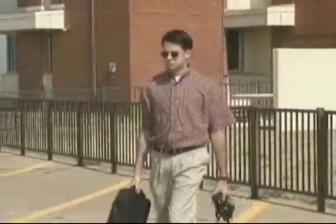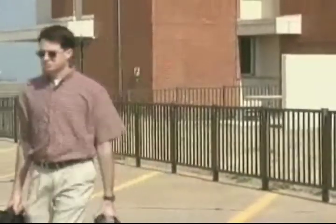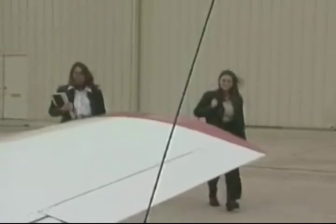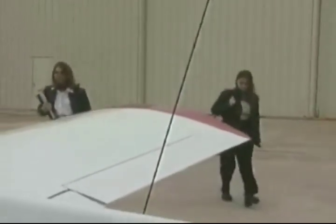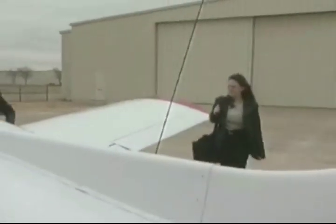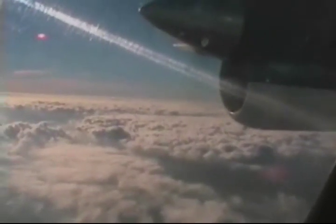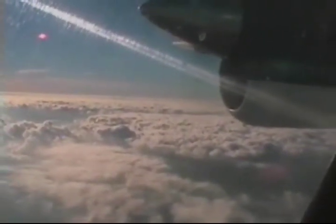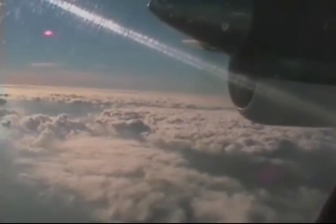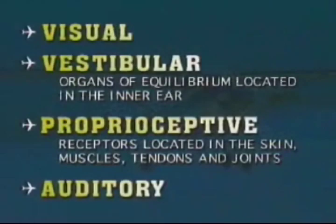Humans possess the natural ability to maintain body orientation and posture in relation to their surrounding environment, whether at rest or in motion. Good spatial orientation is due to effective perception and interpretation of your senses: visual, vestibular, proprioceptive, and auditory information.